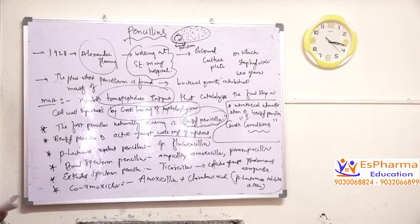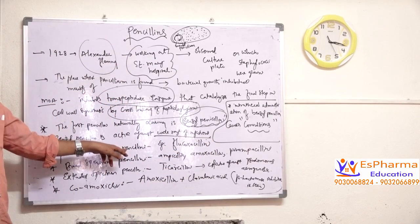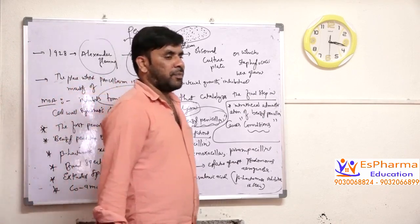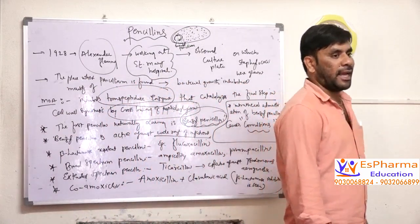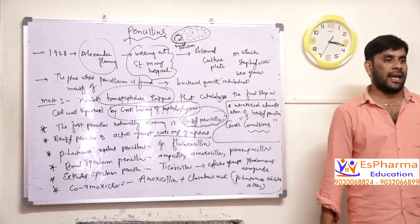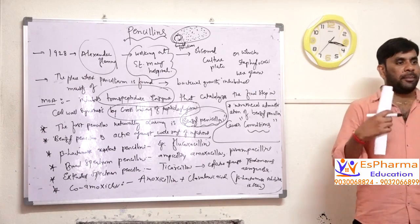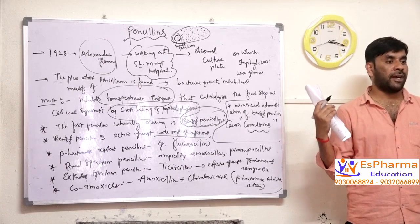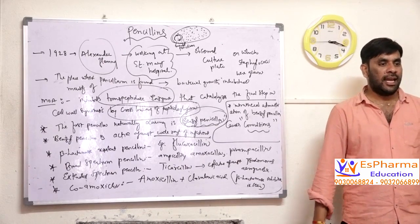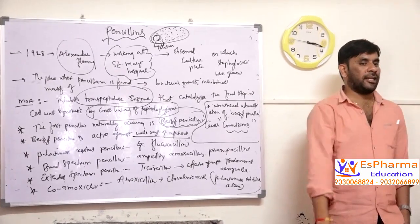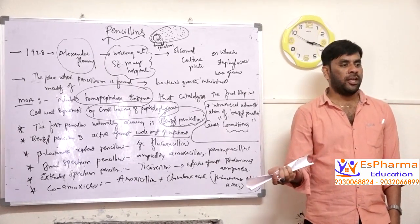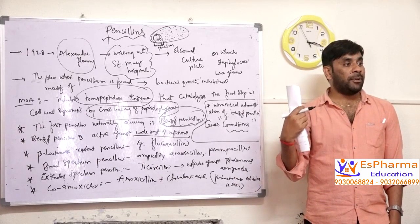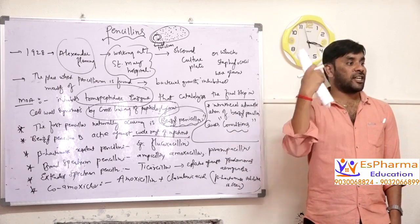We have some penicillins called beta-lactamase resistant penicillins. Penicillin contains one ring called the beta-lactam ring. When penicillin is given, the bacteria produces an enzyme called beta-lactamase, which inhibits that beta-lactam ring. When the beta-lactam ring of penicillin is broken down, the penicillin will not show any action. The bacteria are so clever — they develop an enzyme that breaks down the structure of penicillin itself.